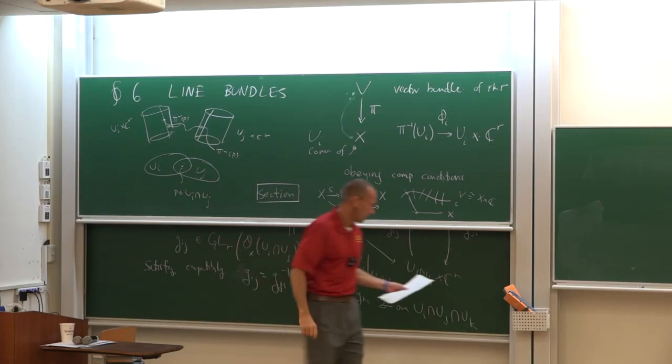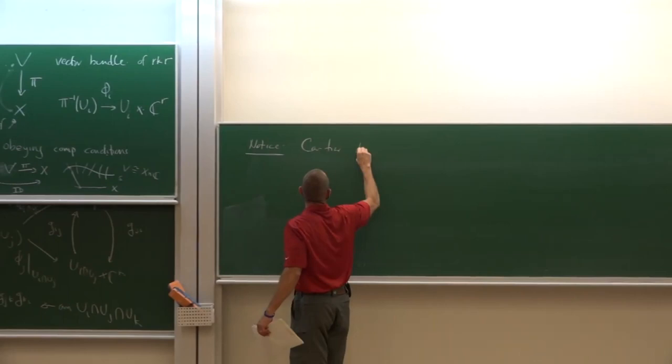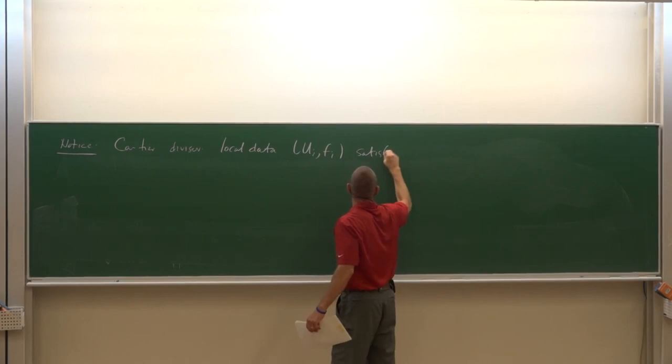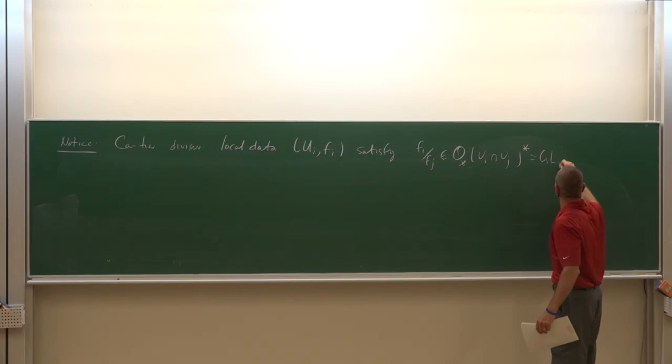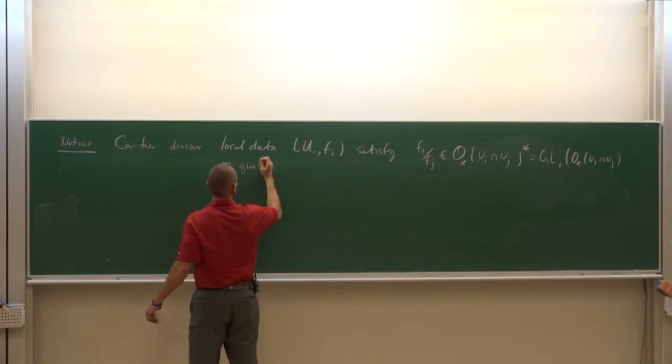Notice: a Cartier divisor has local data {U_i, f_i} which satisfies f_i/f_j in O_X(U_i intersect U_j)^*. Of course this is exactly GL_1(O_X(U_i intersect U_j)). So the local data of a Cartier divisor gives us a line bundle.